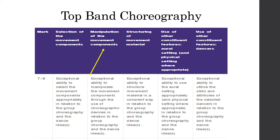We have section one, which is selection of movement components. Section two, which is manipulation of movement components. Then section three, which is structuring of movement material. Section four, which is use of other constituent features such as aural setting and physical setting. And then we have the use of other constituent features, i.e. the use of dancers.